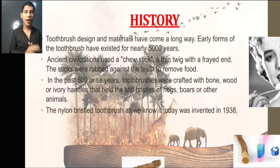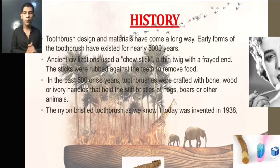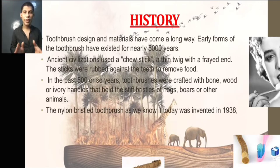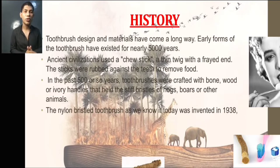In the past 500 years, toothbrushes were crafted with bone, wood, or ivory handles. They used staff bristles, herbs, and other animal materials. Like the bristled toothbrushes we have now, today's version was invented in 1938.